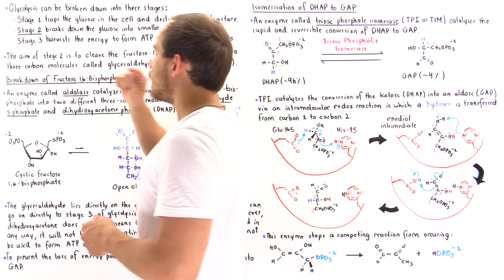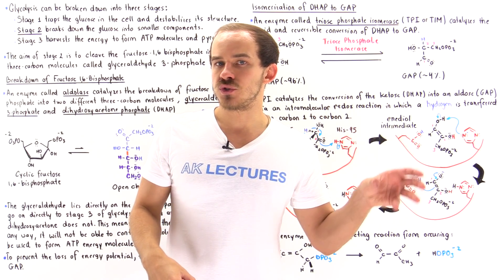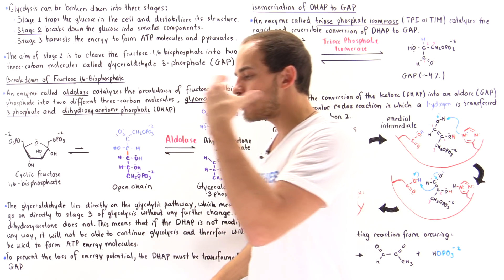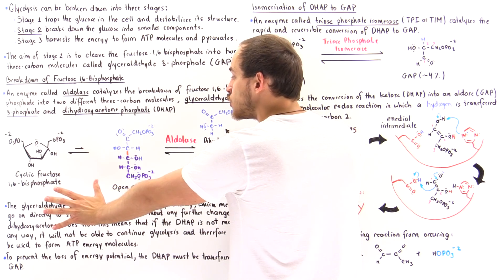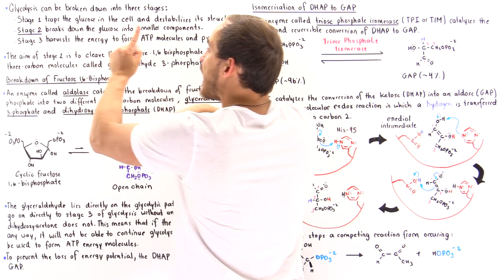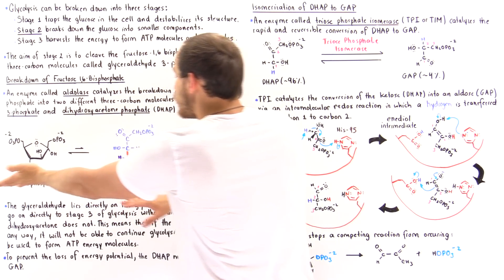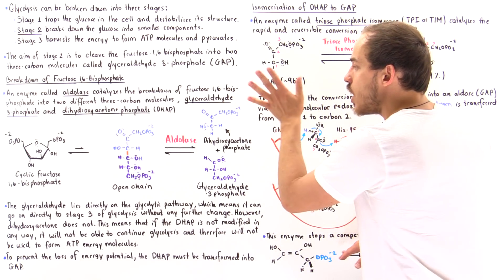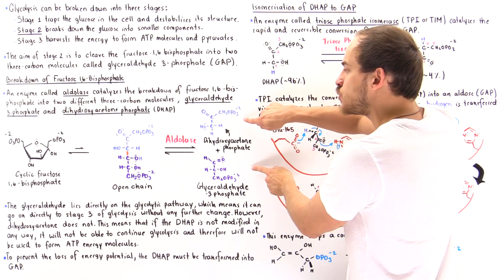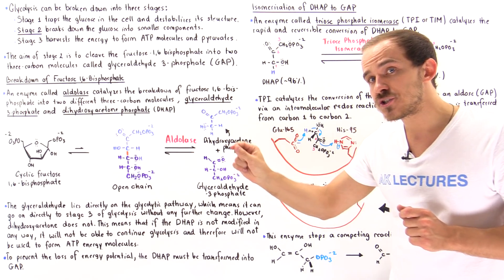Now let's go back to stage one for a moment. The second step of stage one was to transform glucose into the fructose isomer — but why was that necessary? The reason is so that once the aldolase reaction takes place in stage two, we form two molecules that each have three carbons. If glucose had not been transformed into fructose, we would instead have formed one molecule with two carbons and another with four carbons. To achieve this symmetry, stage one must convert glucose into its isomer fructose.